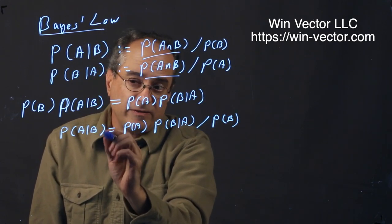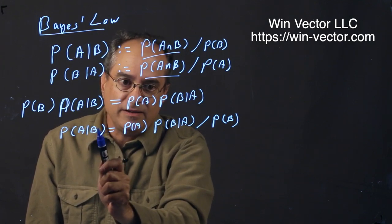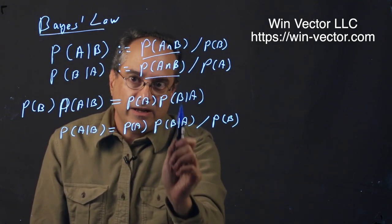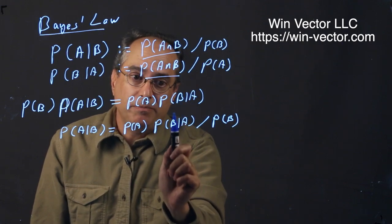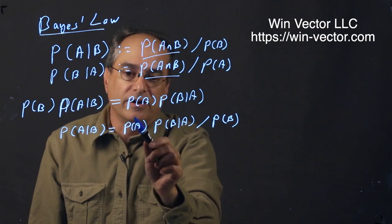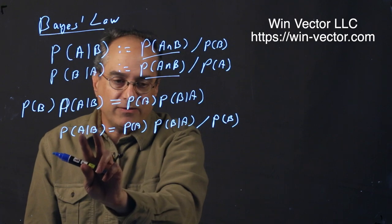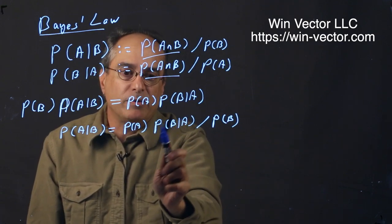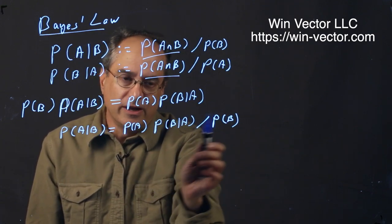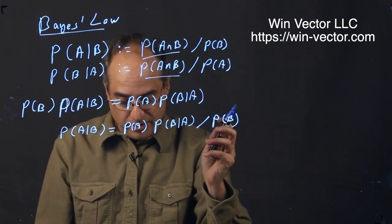This is basically saying how much more plausible A becomes given B is seen is proportionally equal to how much more plausible B becomes given A seen. They both increase and decrease together. This first term here is called the prior. The whole purpose of Bayes' Law is to flip this A given B into a B given A. Maybe we know this one, we'd like to know this one. This denominator is usually eliminated through mathematics. It's usually something hard to determine.